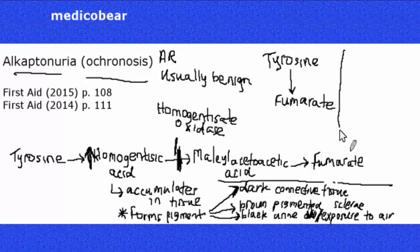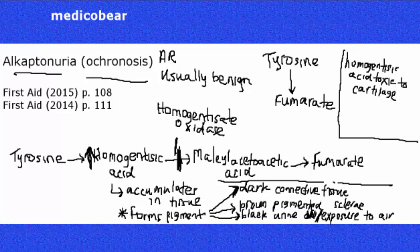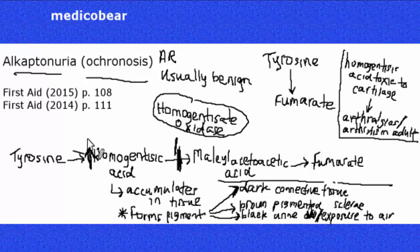The last thing to mention is that homogentisic acid is toxic to cartilage and the joints. So as it builds up, it damages these structures. A patient with alcaptonuria can have arthritis and really bad arthralgias in adult life.